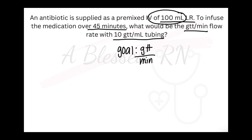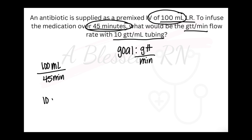With volume, we're looking for the amount to go into the patient over the time that it takes to infuse into the patient's veins. So 100 mLs is to go over 45 minutes — they go together and they stay together on a puzzle piece. And then we have the drop factor, which is 10 drops per mL, and it goes on a puzzle piece.